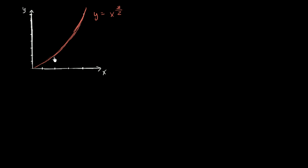So right over here we have the graph of the function y equals x to the 3/2 power. What I want to do is find the arc length of this curve from when x equals zero to when x is equal to 32 over nine — I picked that strange number because it makes the numbers work out very well. 32 over nine is three and five ninths, so it's a little bit past three and a half. We want to find this arc length right over here, depicted in yellow, from zero to 32 over nine.